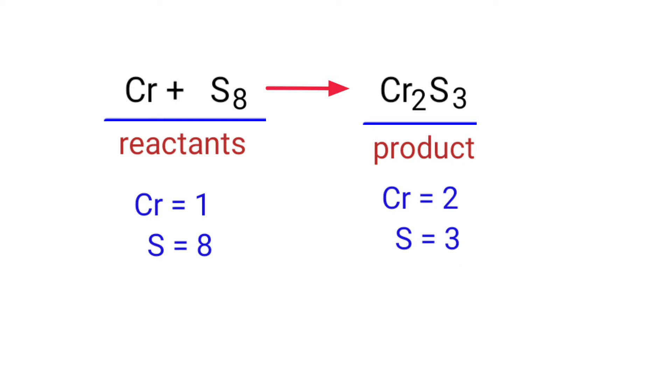If you look at this equation, the equation is not balanced. In the reactant side there are one chromium atom and eight sulfur atoms present, and in the product side there are two chromium atoms and three sulfur atoms present. The number of atoms are not balanced on both sides.